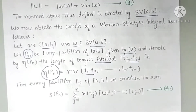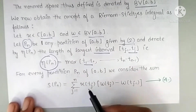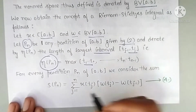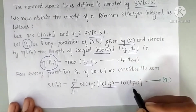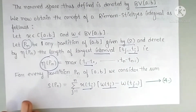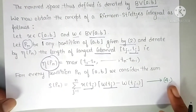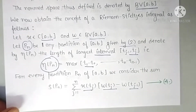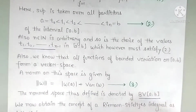The Riemann-Stieltjes sum S(P_n) is the summation over the function x (with respect to w). We have already studied this definition — where x is the function and w is the function of bounded variation.